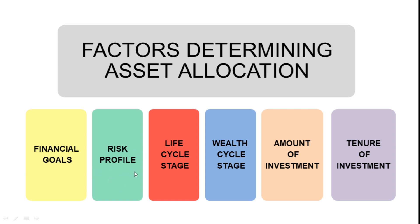It depends on risk profile — how much risk you are ready to take. Many people are conservative and don't take higher risk. Conservative people usually invest in debt funds, balanced funds, fixed deposits, pension funds, and gold avenues — schemes which are on the safer side. Whereas people with higher risk-taking ability would be investing in equity classes, the share market, and real estate. Investors would be classified according to their risk profile.